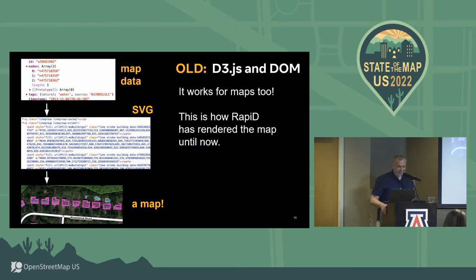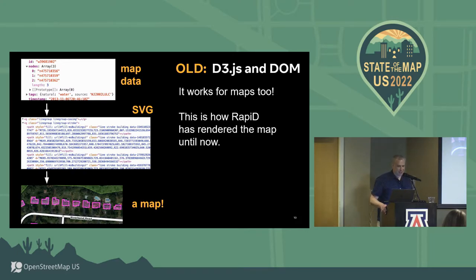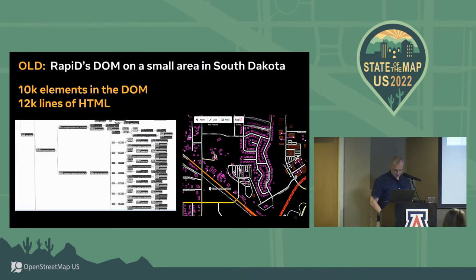D3 works for maps too — it's traditionally how Rapid and ID before it did all its rendering. You start with nodes and ways from the OSM API or GeoJSON building footprints, and D3 creates an SVG document of paths that you see in the browser as a map. You can style buildings with CSS or listen to hover and click events. But things break down when you push more data at it, because the DOM API — how a browser-based app updates visible content — is notoriously slow. You don't want your web application touching the DOM because every change forces the browser to recalculate layout and styling.